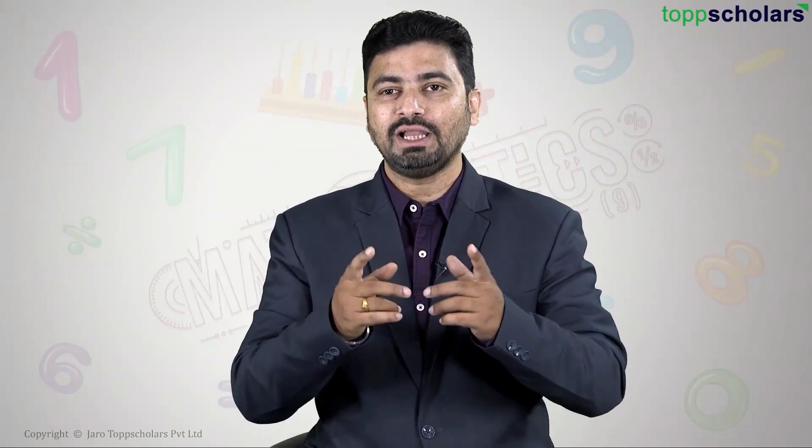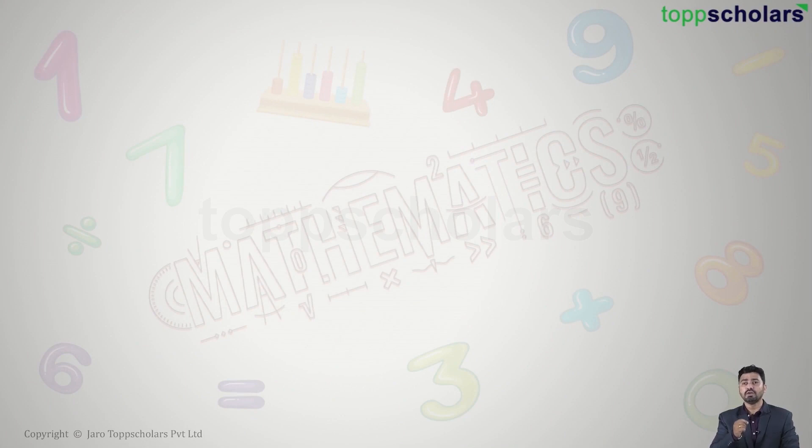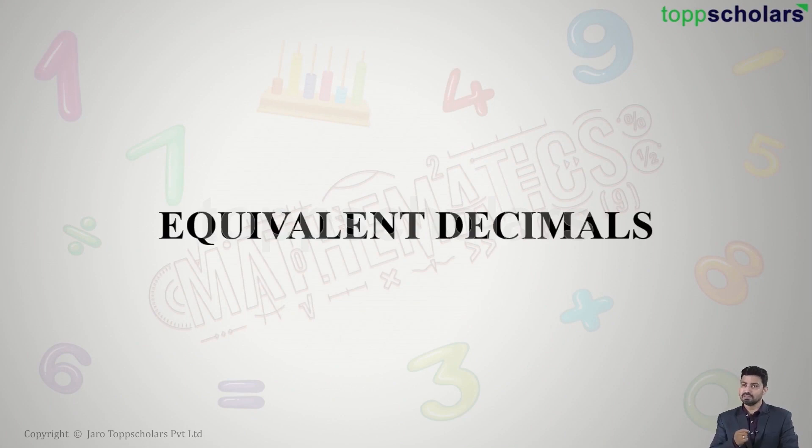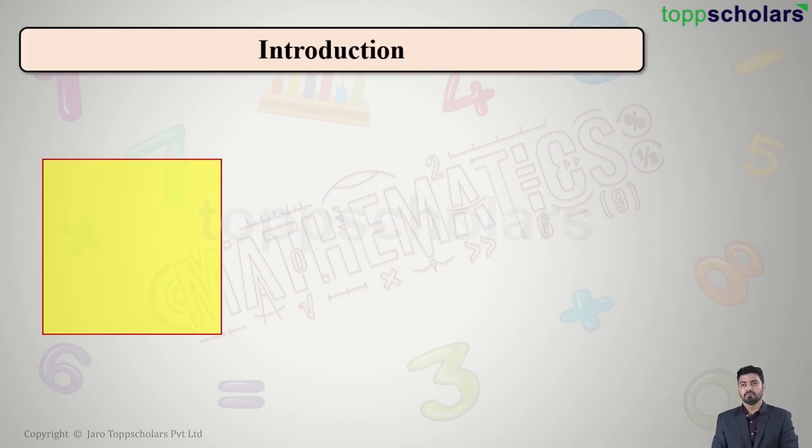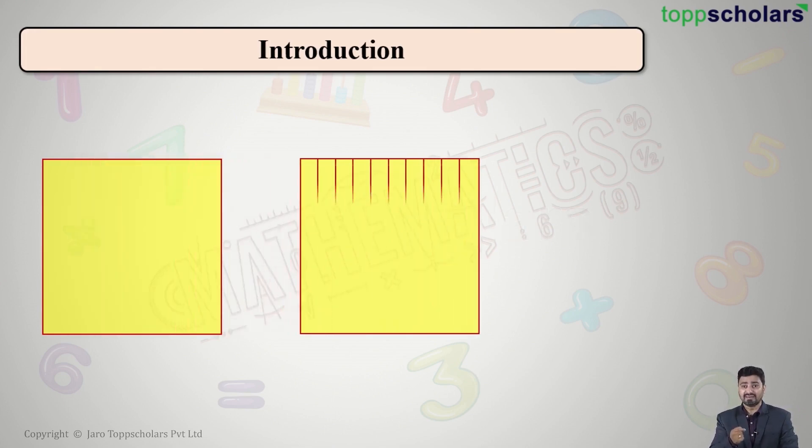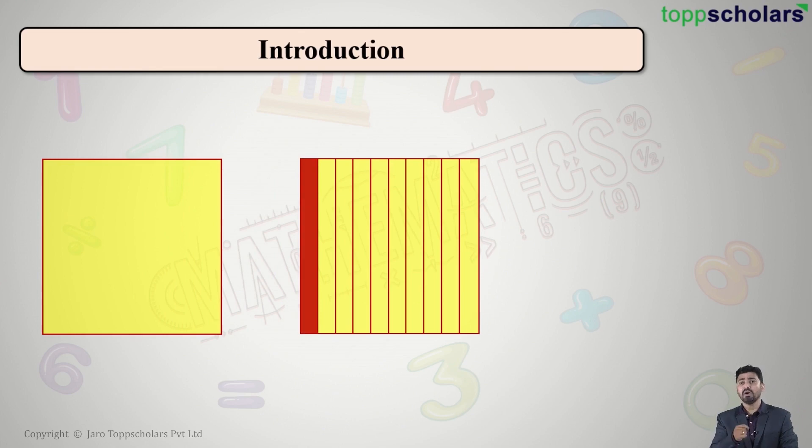Hello students, welcome to Top Scholars. Today we are going to learn about equivalent decimals. Now consider a square. If I divide this square in 10 equal parts and I select one part out of those 10 parts, how do I write it in fraction form? I write it as 1 out of 10.